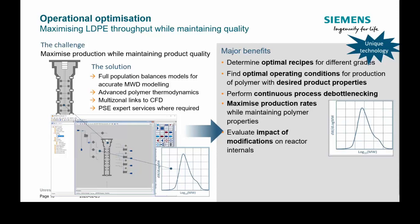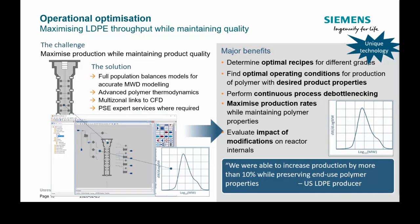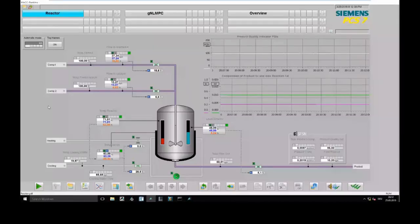In combination with the hybrid CFD interface, we were able to create a really predictive, accurate model that can predict the molecular weight distribution. In combination with the optimization technology of gPROMS, we can then find the optimum operating point by changing feed temperature, temperature set points, and pressure. This increased productivity at this customer by 10% while preserving the end-use polymer properties — which is quite crucial.